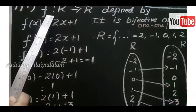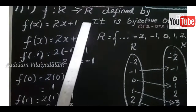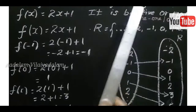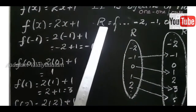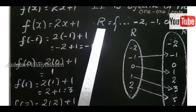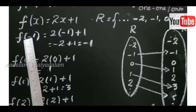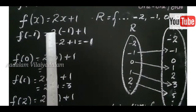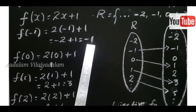Next question: F such that R tends to R defined by F of X equal to 2X plus 1 — is it bijective? Bijective means both one-to-one and onto functions. Here F of X is 2X plus 1. R is the real numbers, which consist of integers, fractions, and decimals. We take any values. If X equals minus 1, F of minus 1 equals 2 into minus 1 plus 1, so minus 2 plus 1, the answer is minus 1.